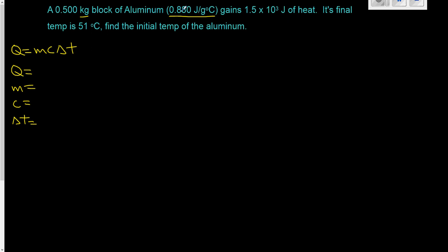We could convert the constant. We could express aluminum and represent it as joules over kilograms degree Celsius. But what I tend to get my students to do is leave the constant alone and change the other values.